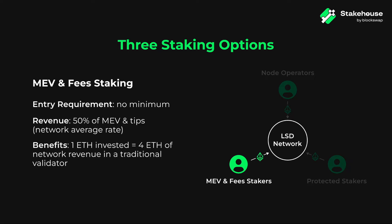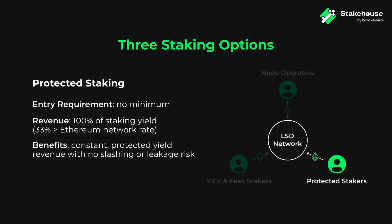The third option is protected staking. This is your best option if you want to accrue passive Ethereum staking yield with zero slashing or leakage risk. As a protected staker, you can stake any amount of ETH and earn 33% more than a traditional validator's staking rewards on a per ETH basis.